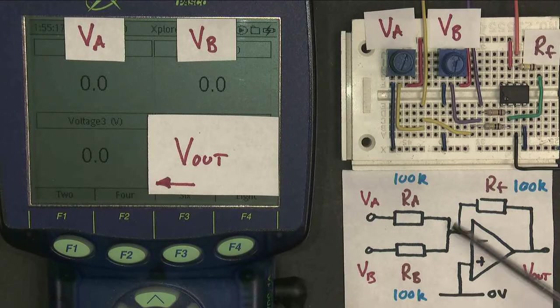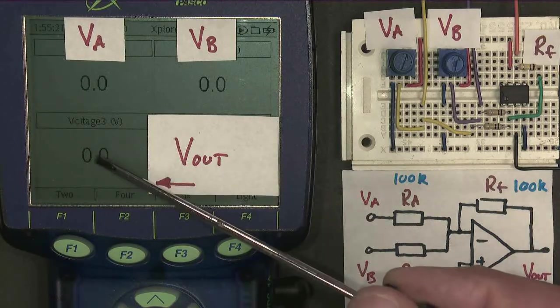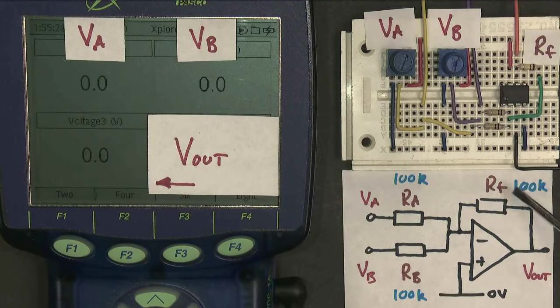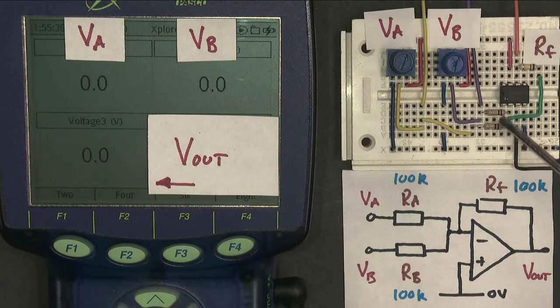The two voltages are added together, and they give me an output voltage, Vout, which is just here. And I've got my circuit built at the moment with three 100K resistors. Here's the feedback resistor. Here are the two input resistors just here.